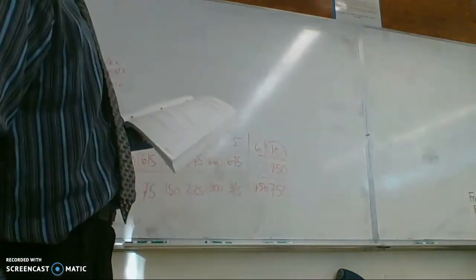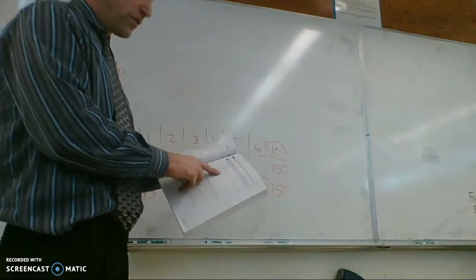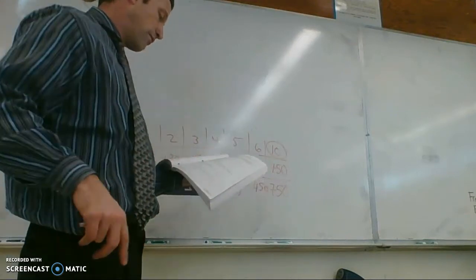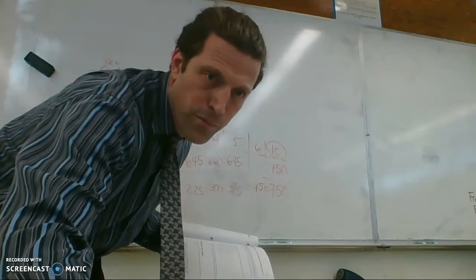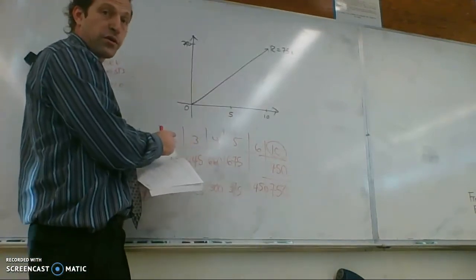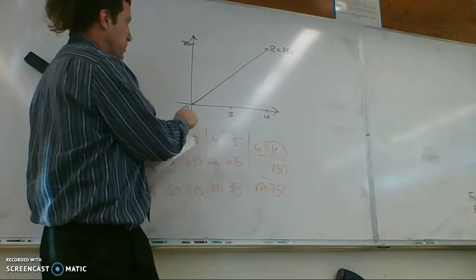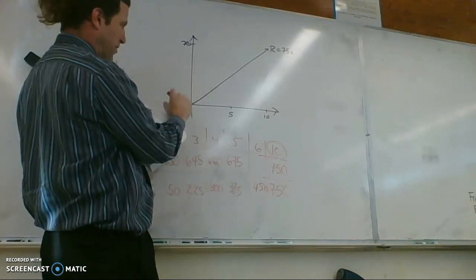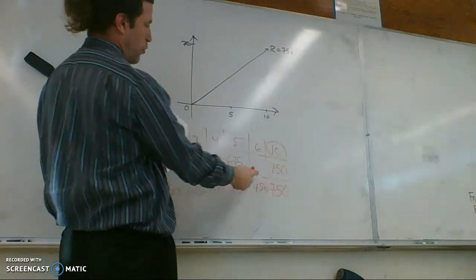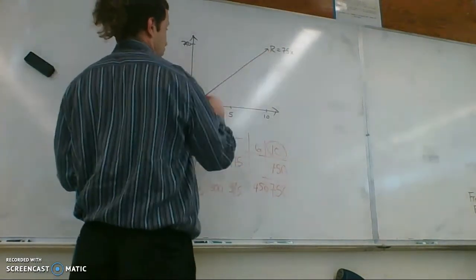And then it asks us to graph this here. I'm not going to do that right now. Well, sure I will. Sure I will. So here's my graph right here. You can see the way they've got it labeled. $750 takes about the same amount of squares as 1.